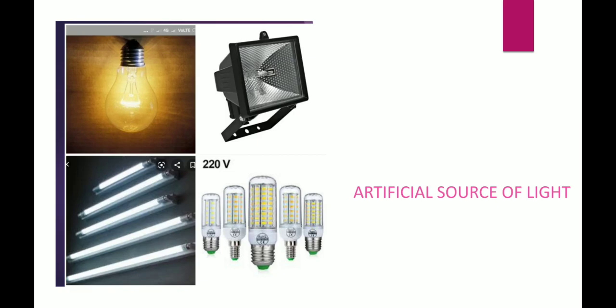Next, artificial source of light. The name itself indicates it is artificial, i.e. manmade. Examples for artificial source of light are incandescent bulb, halogen lamp, LED bulbs and fluorescent lamp.